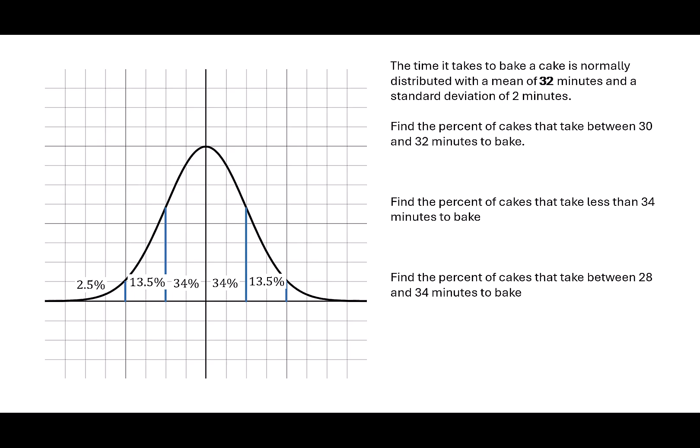Before we start answering the questions, let's label our graph. I'll start by placing the mean on the graph. Remember that the mean will always be the center and the highest point we see. We have a mean of 32 and a standard deviation of 2.